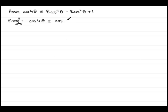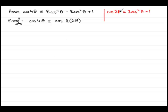I can think of this as cosine of 2 times 2 theta — cos of 2 lots of 2 theta, which gives 4 theta. We should know this identity: cosine of 2a is identical to 2 cos squared a minus 1. If I replace a with 2 theta, then we've got 2 times 2 theta, and so it's going to be 2 cos squared 2 theta minus 1.